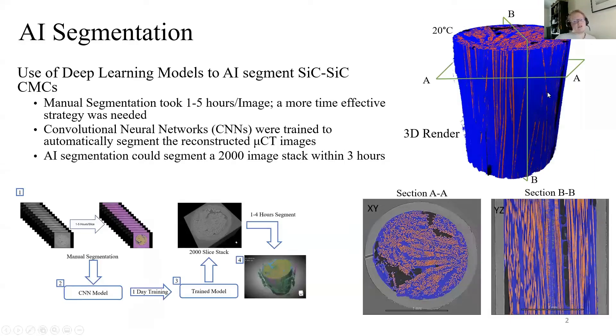Manual segmentation of the images was an incredibly lengthy process, with time varying on how complex the images were to the segmenter. And so we decided to train neural networks or AI segmentation models to do it for us.